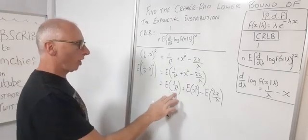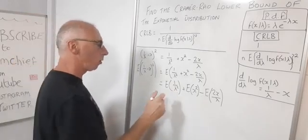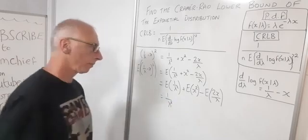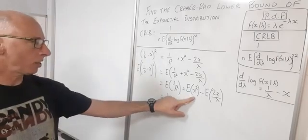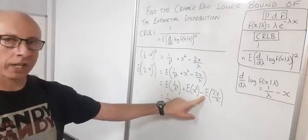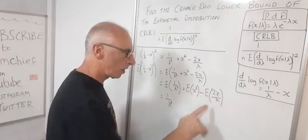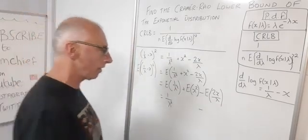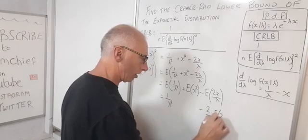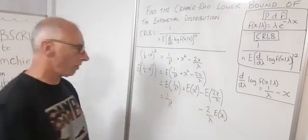The expectation of 1/lambda squared has no x term, so it's just 1/lambda squared. For the last term, we can take 2/lambda out and just leave E[x]. So we have 1/lambda squared plus E[x squared] minus 2/lambda times E[x].